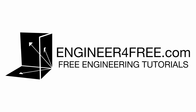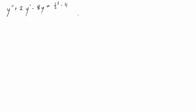Welcome back. In this video we're going over one more example using the method of undetermined coefficients to find a particular solution to a second order non-homogeneous differential equation, where the right hand side is an nth degree polynomial. Before we get into using the actual method, a good thing to do is find the complementary solution to the differential equation, because then we'll also be able to find the general solution if required.